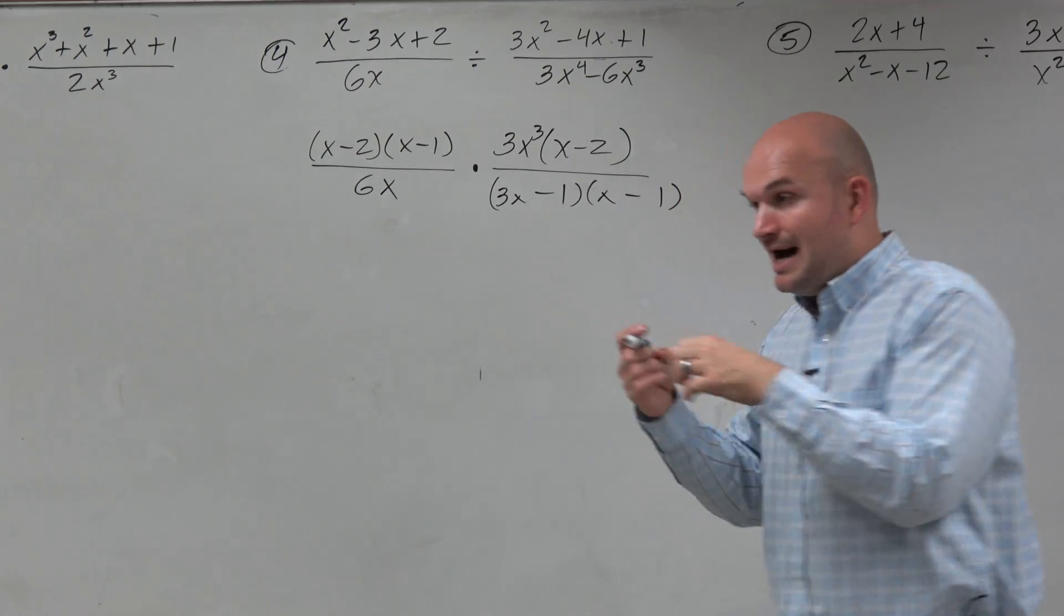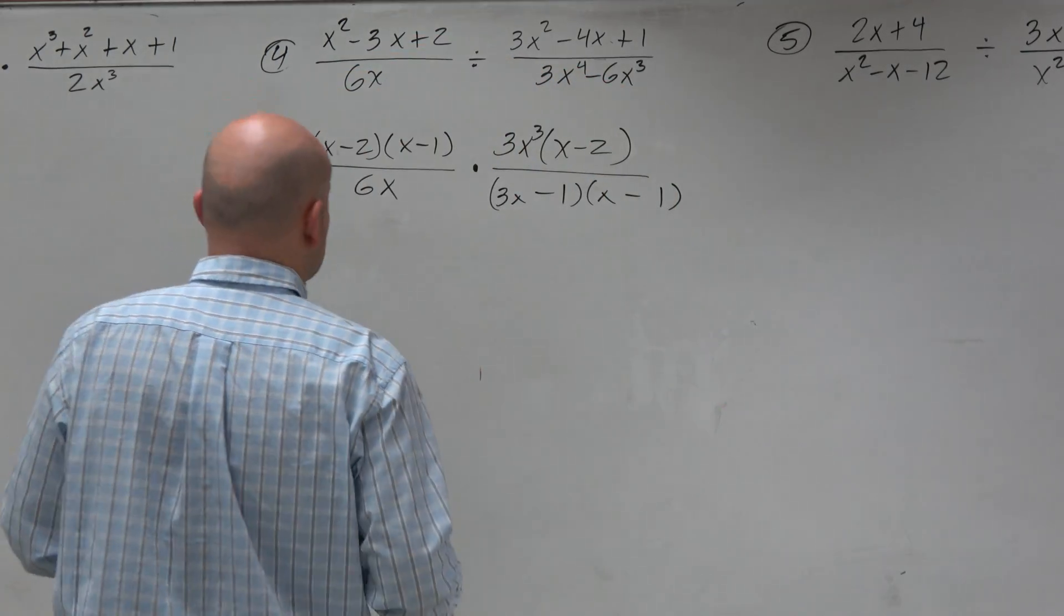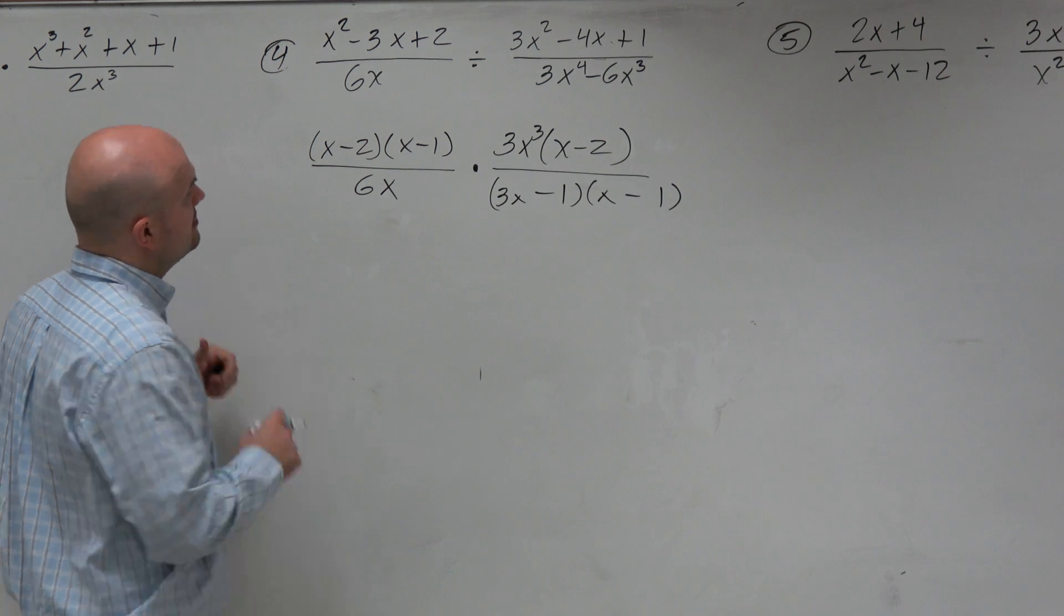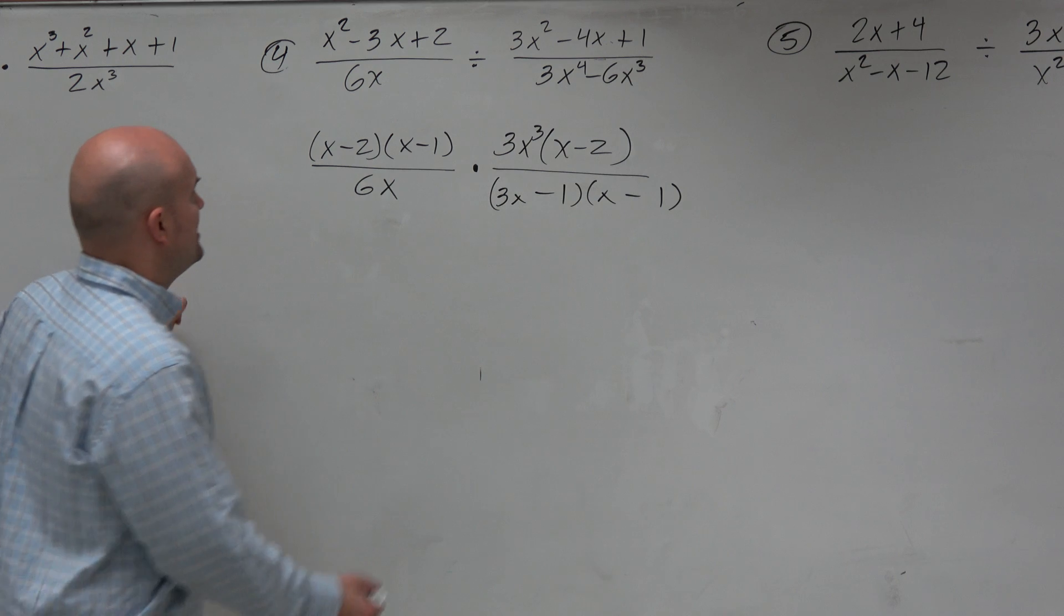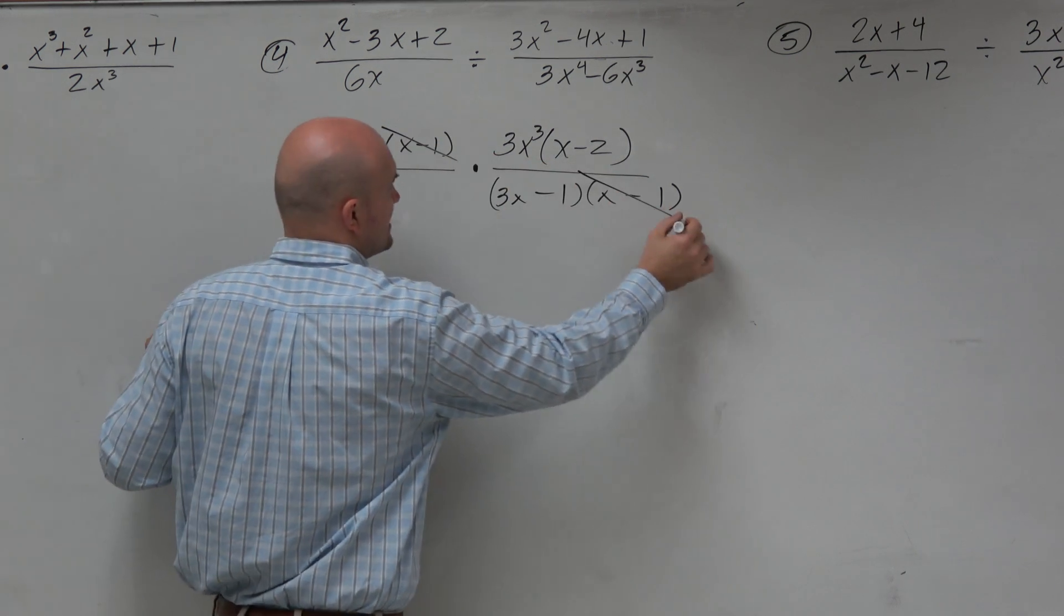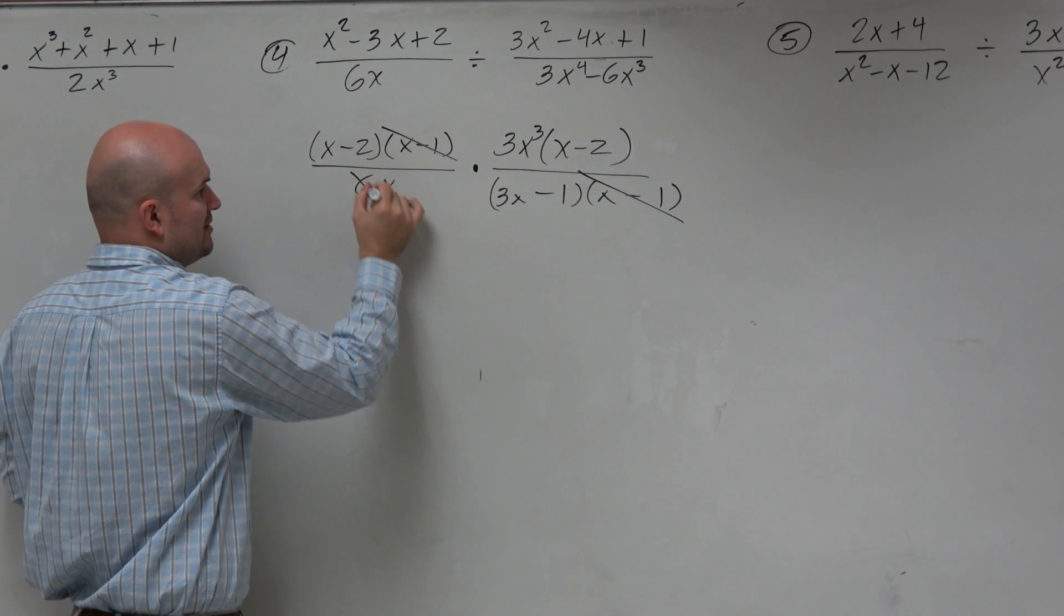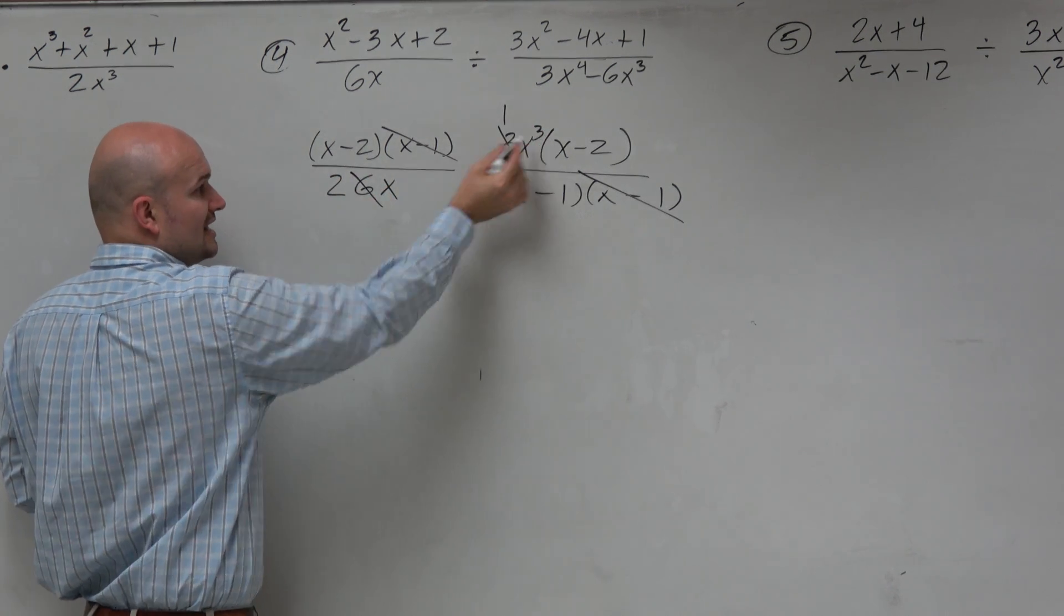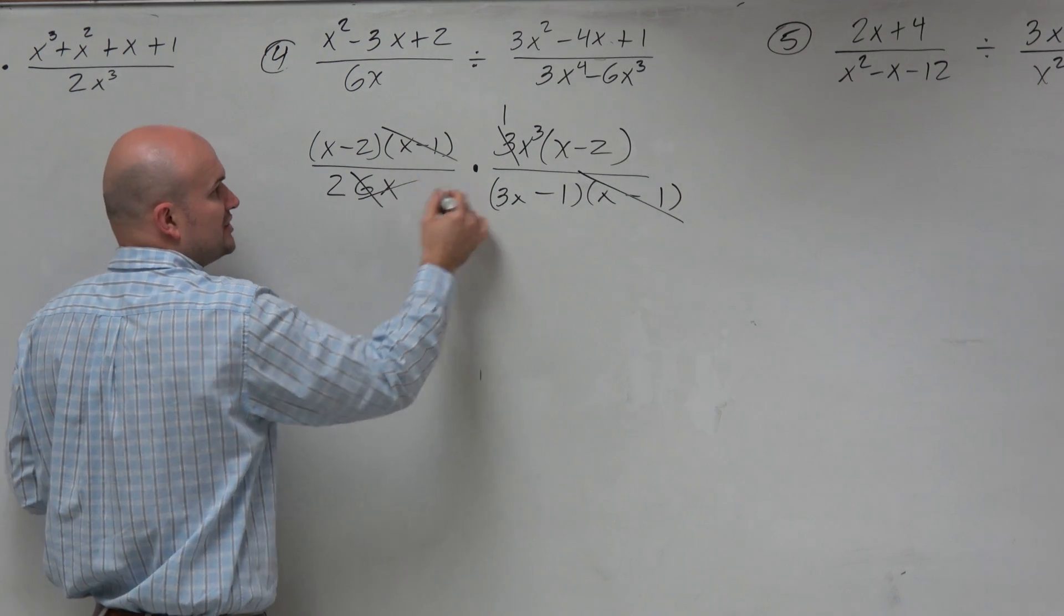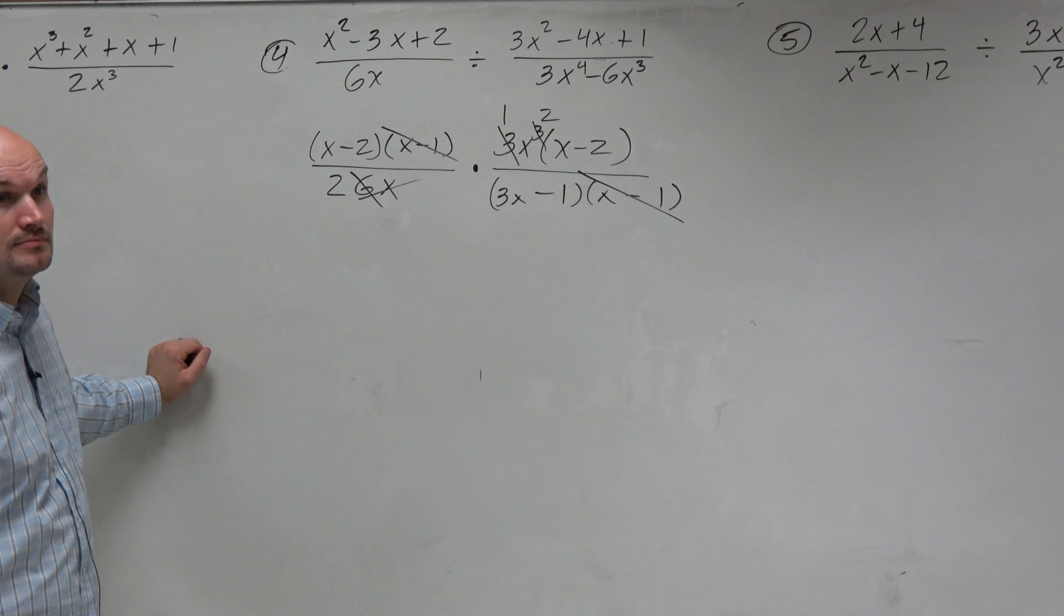So now I have all my factors separated by multiplication. Now I can apply the division property. And I see that these x minus 1's divide out. 3 over 6 can be reduced to 1 half. x cubed over x can be reduced to an x squared. Right? Yes?